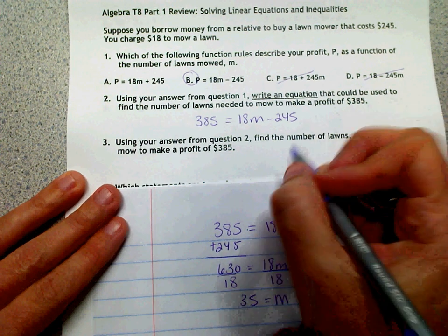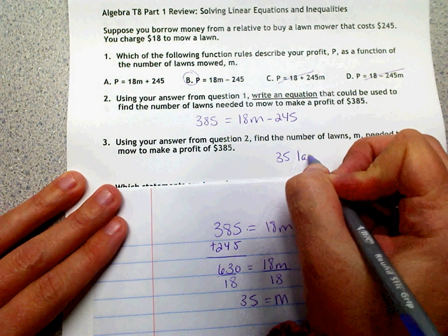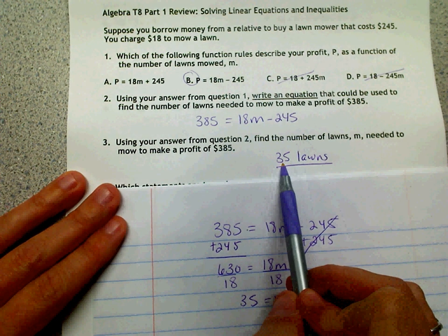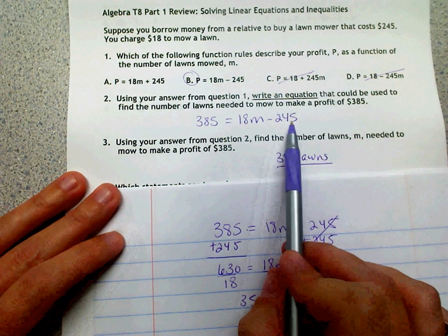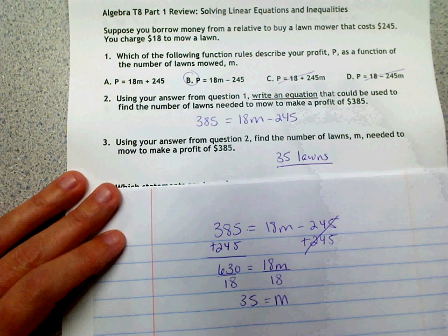He needs to mow 35 lawns. If he mows 35 lawns, that means that he can pay for his lawnmower and then still have $385 left.